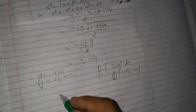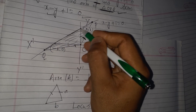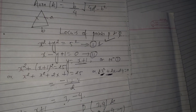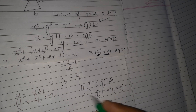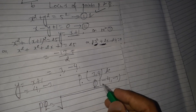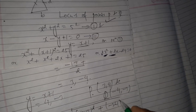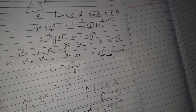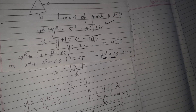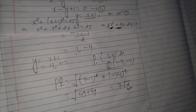Now we calculate the base PQ using the distance formula. PQ equals the square root of (minus 4 minus 3) squared plus (minus 3 minus 4) squared, which equals the square root of 49 plus 49, giving 7 root 2 units.